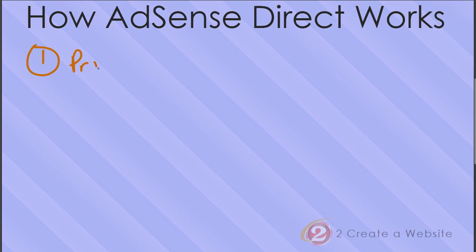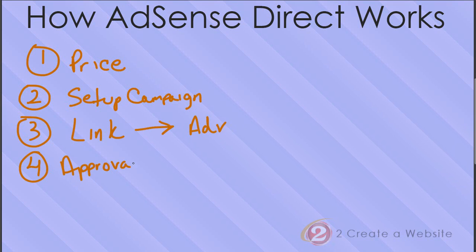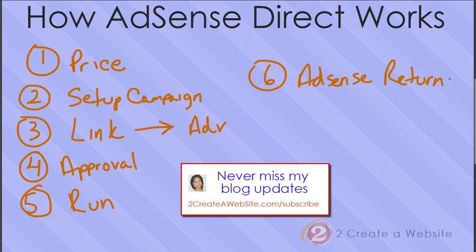The first thing you're going to do is negotiate a price with the person — via email, offline, or whatever. Once you've negotiated a price, you're going to log into AdSense and set up a campaign. Once you have the campaign, it's going to generate a link and you send that link to the advertiser so they can set up their banner and their link. Then you approve it, Google does the same, and the ad will begin running on the day you've agreed upon. Once the ad finishes, your AdSense ads return and begin running just like they were before.